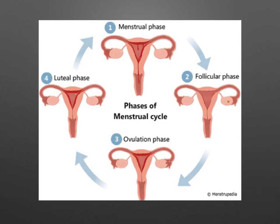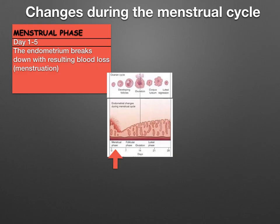Now let's look at the different phases of the menstrual cycle. Take a moment to look at this diagram — notice what's happening with the endometrium and also inside the ovary. The menstrual phase is about day one to day five. This is when the endometrium breaks down and it results in blood loss — we call this menstruation.